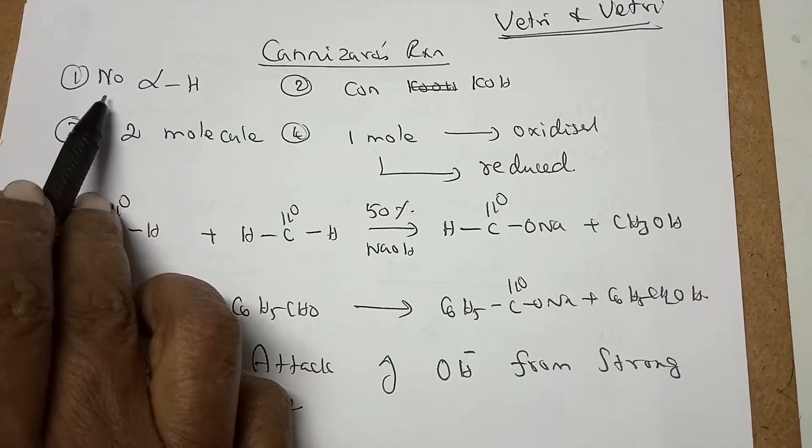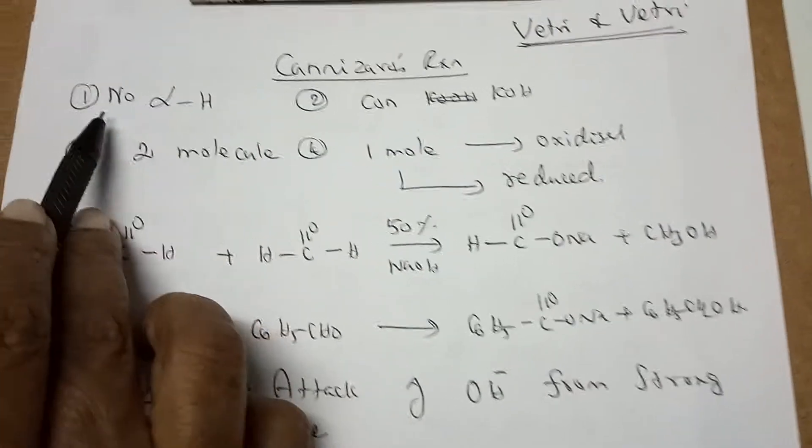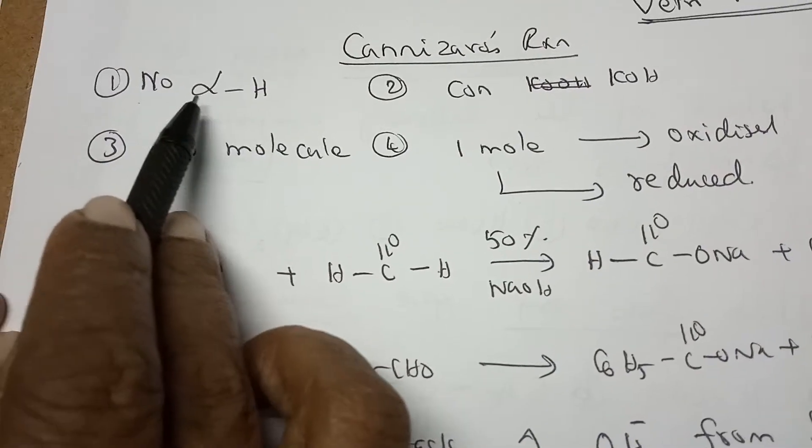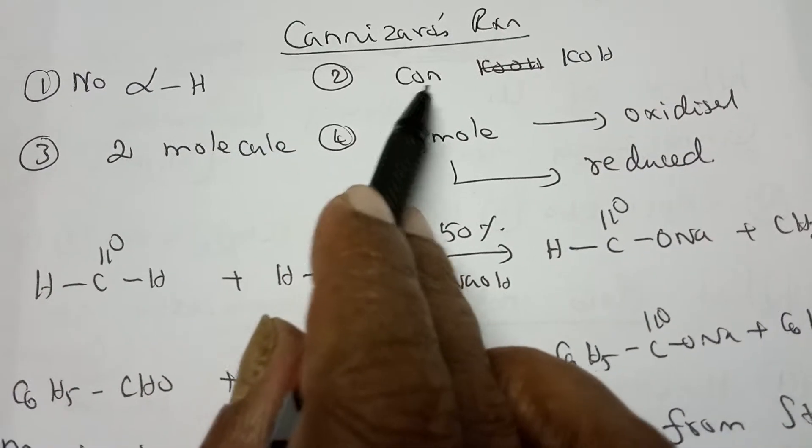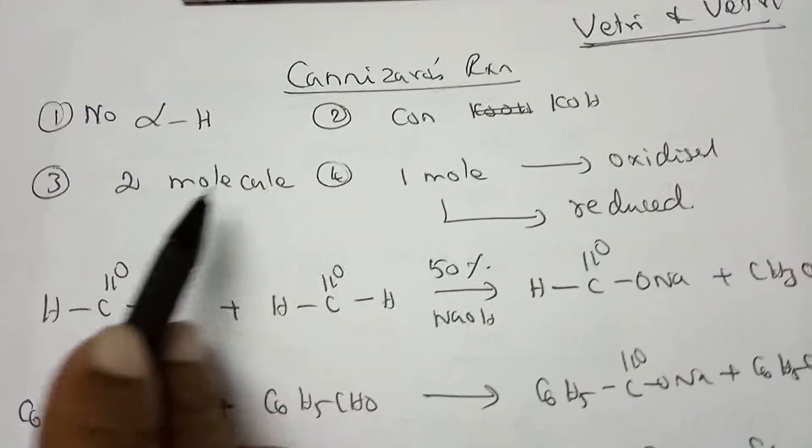The conditions for Cannizzaro reaction: the carbonyl compounds, that is aldehydes or ketones, without alpha hydrogen. This is the first condition, no alpha hydrogen. Number two, presence of concentrated potassium hydroxide or sodium hydroxide.